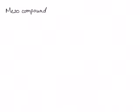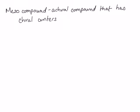The topic of this lecture will be meso compounds. We've seen meso compounds before, we just haven't given them a name. A meso compound is an achiral compound that has chiral centers. Let's look at some examples.